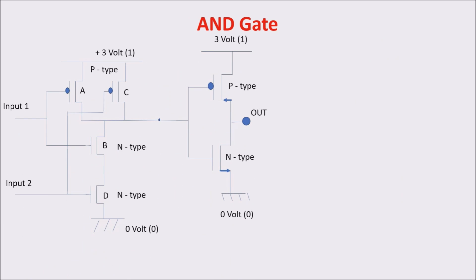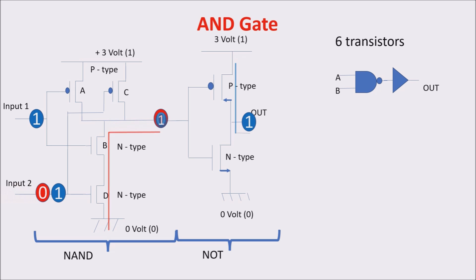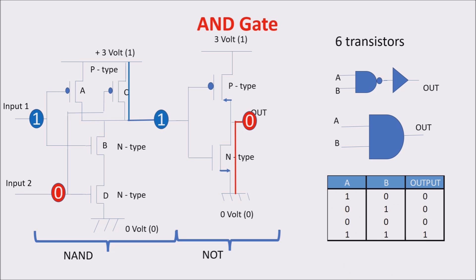Now we see the AND gate. It is composed of a NAND plus a NOT gate, so it is built with six transistors, not eight as if we built it using just NAND gates. In this gate, the only way to have a 1 on the output is applying two 1s on the inputs. If I apply a 0 in at least one of the two inputs, I get a 0 on the output, because at least one P-type transistor is ON and the inverter turns the 1 at the NAND output into 0. The truth table confirms: we get a 1 on the output only if we have a 1 in both inputs — hence the name AND.